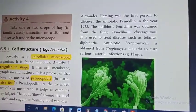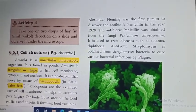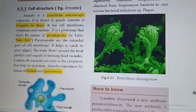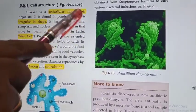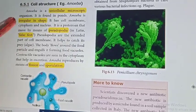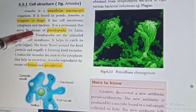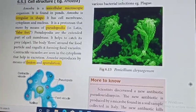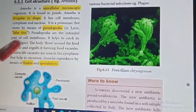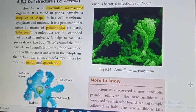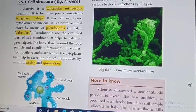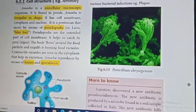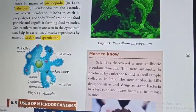The familiar example for protozoan is amoeba. Amoeba is a unicellular microscopic organism found in ponds. It is irregular in shape and moves from one place to another with the help of pseudopodia, meaning false feet. Its body flows around food particles and engulfs them forming food vacuoles. Contractile vacuoles inside the cytoplasm help in excretion. Amoeba reproduces by means of fission and sporulation. Please practice the diagram of amoeba.